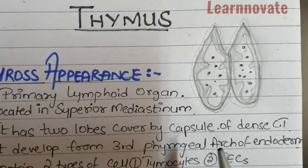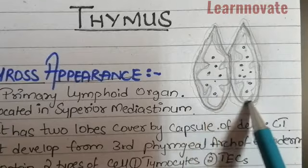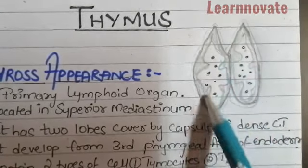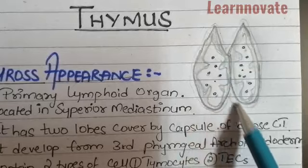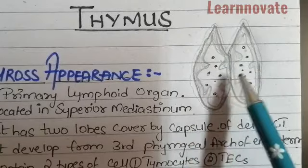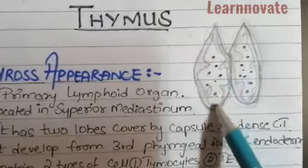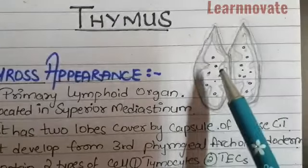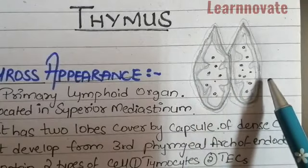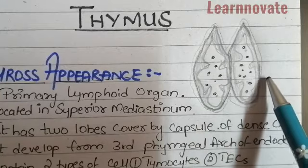So the thymus, if we see it grossly, has an outer capsule. This outer capsule is present in the thymus and it has a bi-lobed structure with an outer cortex and an inner medulla. These are the corpuscles of the thymus, which are very important for lymphocyte production.